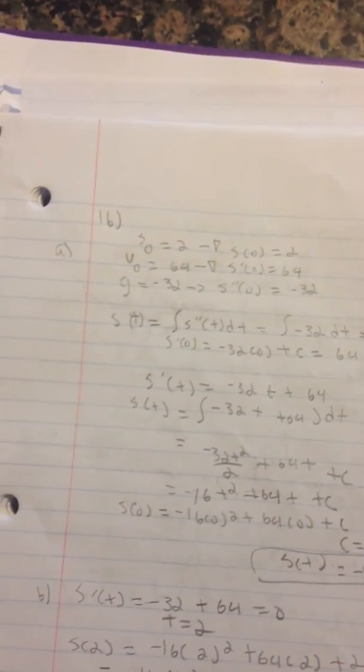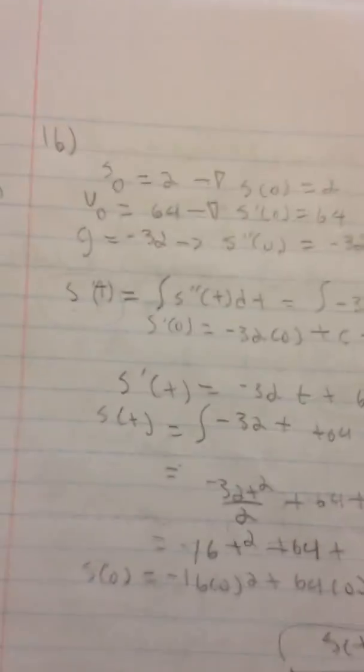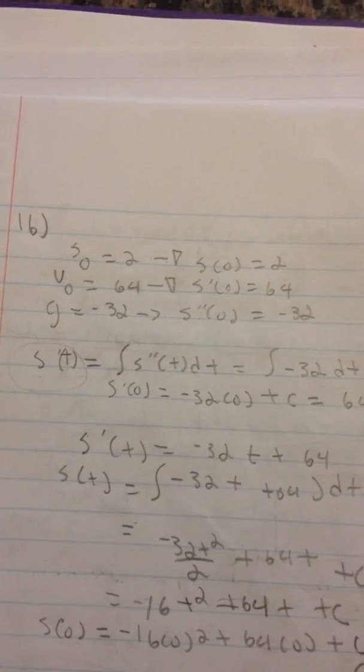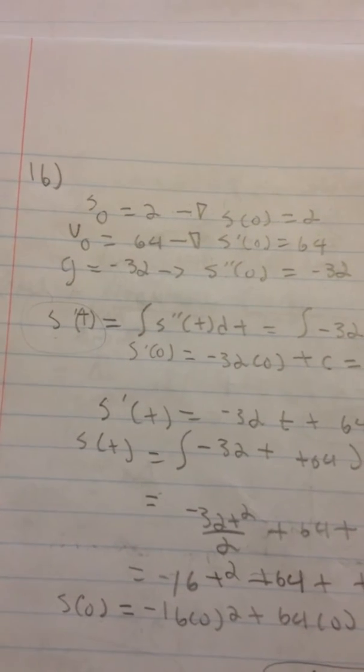Alright, I have number 16. A ball is thrown vertically upward from a height of 2 feet with an initial velocity of 64 feet per second. Acceleration due to gravity is negative 32 feet per second squared.